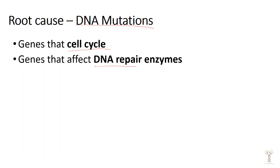We have genes that repair DNA. DNA mutations can sometimes occur through DNA replication — the enzyme that produces new DNA, called polymerase, can sometimes put the wrong nucleotide in. So we have DNA repair enzymes that can fix those mistakes. If there is a mutation in a repair enzyme, then mistakes can't be fixed.